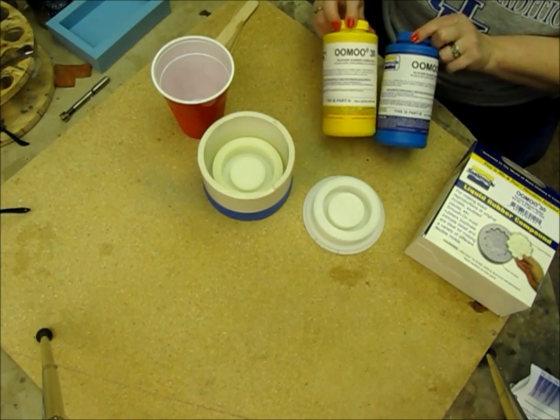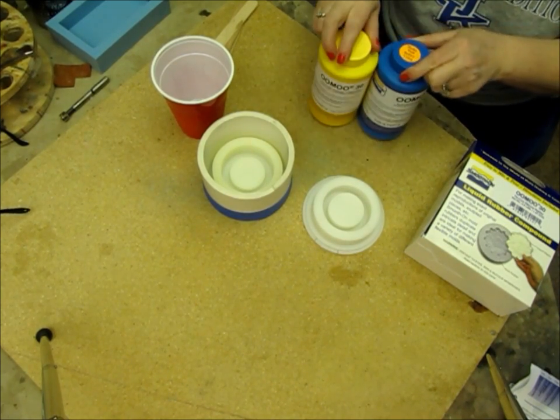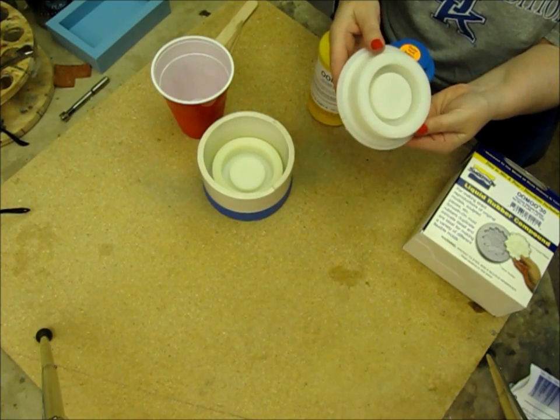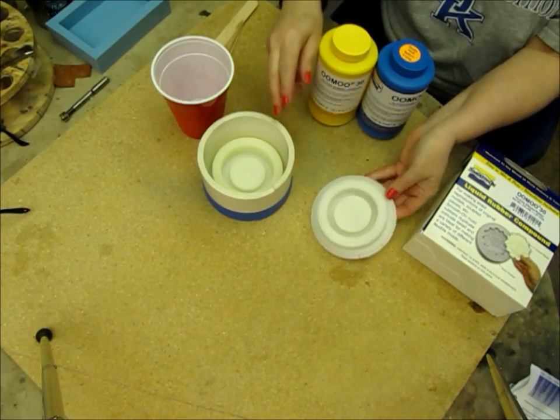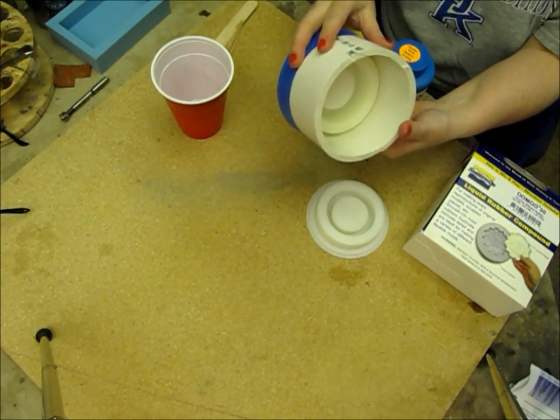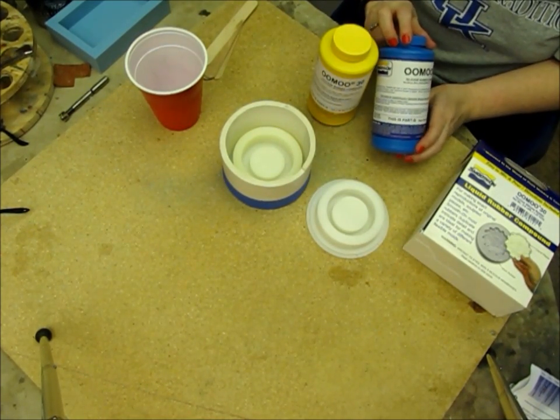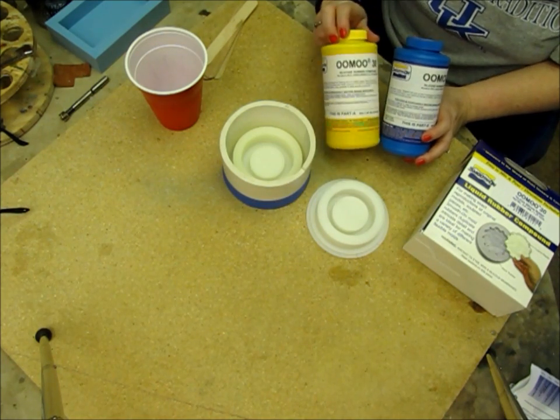We're going to make a bracelet mold using UMU 30, a liquid rubber compound. You're going to turn a positive for your bracelet mold so that you can pour your mold. This is mixed by volume. You're going to mix equal parts, part A and part B together.